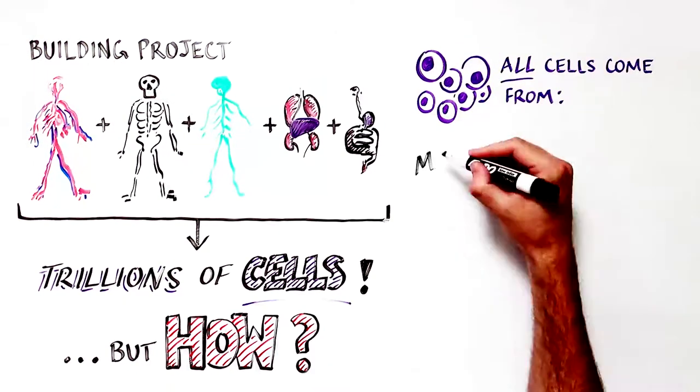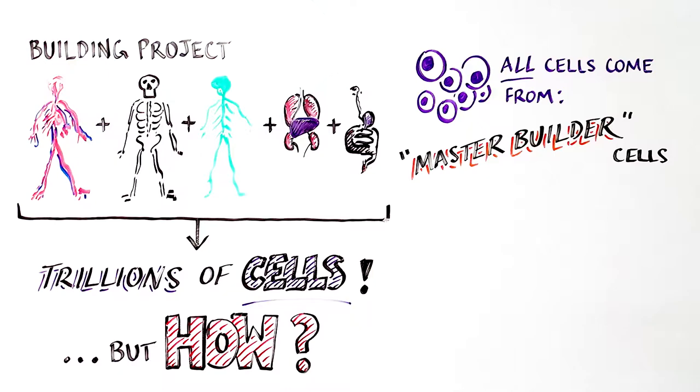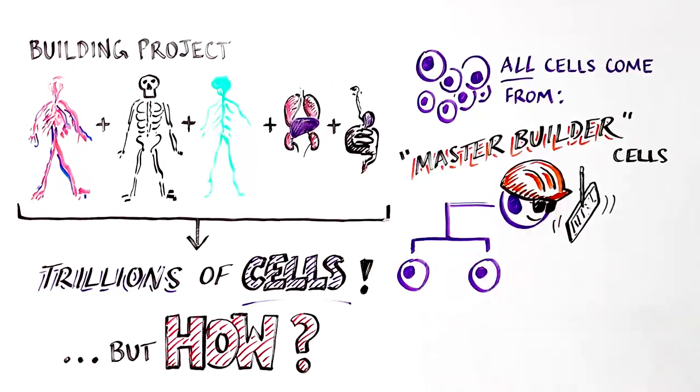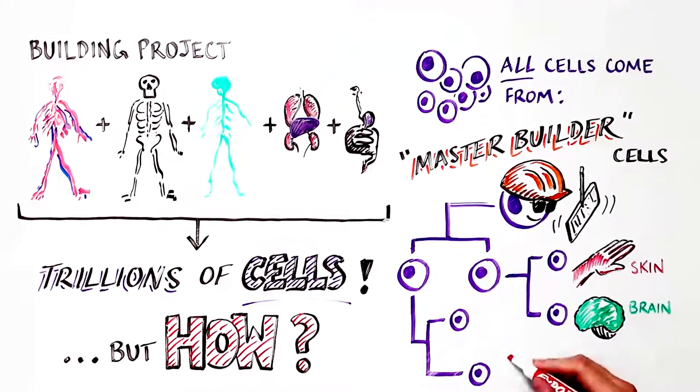Amazingly, all of the different types of cells in the body are derived from a small group of versatile master builder stem cells called pluripotent stem cells, which can generate any type of tissue or cell in the body: a skin cell, brain cell, or heart cell.